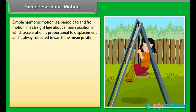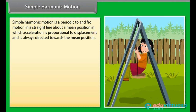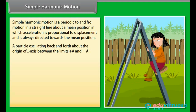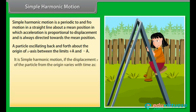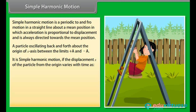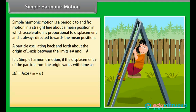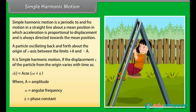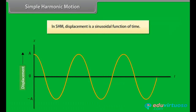Simple harmonic motion is a periodic to-and-fro motion in a straight line about a mean position, in which acceleration is proportional to displacement and is always directed towards the mean position. Consider a particle oscillating back and forth about the origin of an X-axis between the limits +A and −A. It is simple harmonic motion if the displacement X of the particle from the origin varies with time as: X(t) = A cos(ωt + φ), where A is the amplitude, ω is the angular frequency, and φ is the phase constant. In simple harmonic motion, displacement is a sinusoidal function of time.